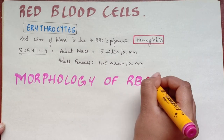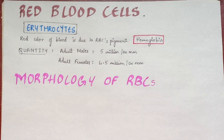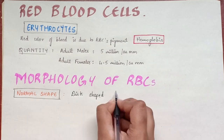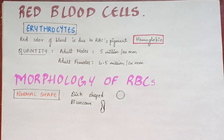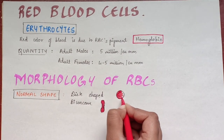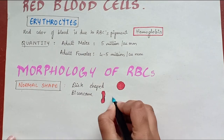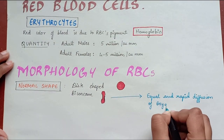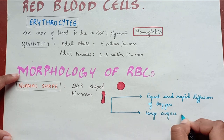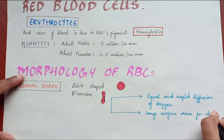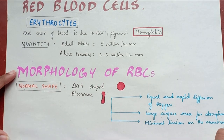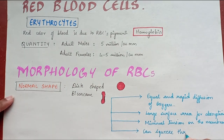Morphology of red blood cells — normal shape: RBCs are disc-shaped and biconcave, i.e., dumbbell shaped. The biconcave contour of RBC has the following mechanical advantages: equal and rapid diffusion of oxygen, large surface area for absorption, minimal tension on the membrane, and the ability to squeeze through capillaries.